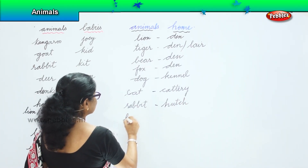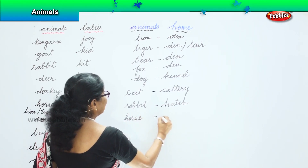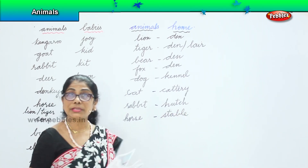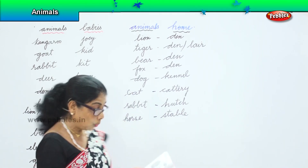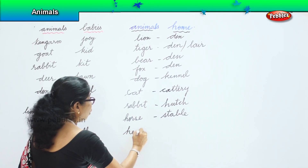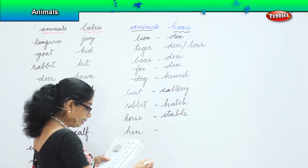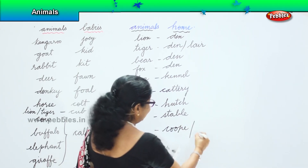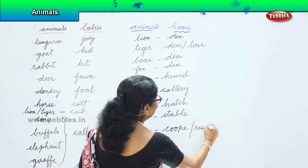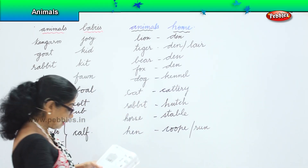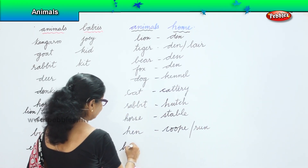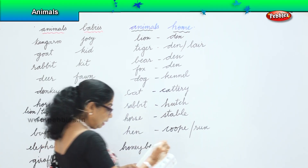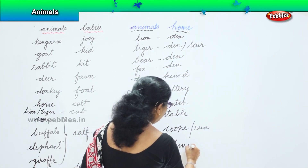What about the horse? Horses live in a stable. What about the hen? The hen lives in a coop, or you can say they live in a coop or run. The honeybee lives in a beehive.